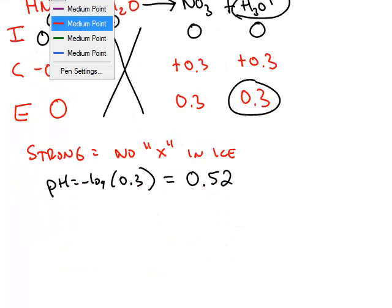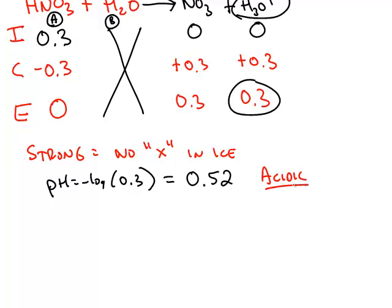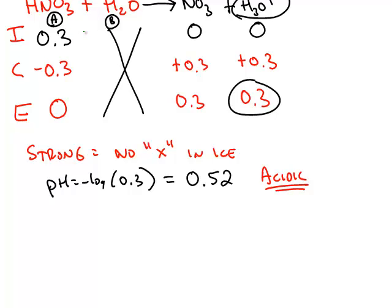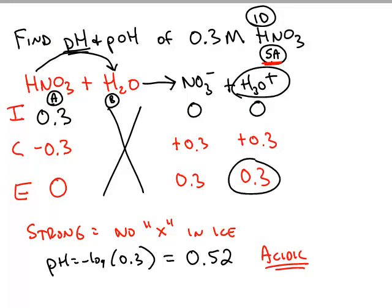0.52 makes sense because this is definitely less than 7. Seven is neutral at 25 degrees, and every problem will be assumed to be at 25 degrees unless the temperature is specified as something else. When there's no temperature given, we know the temperature is 25 degrees. So pH 0.52 is definitely acidic, which makes sense for a strong acid.